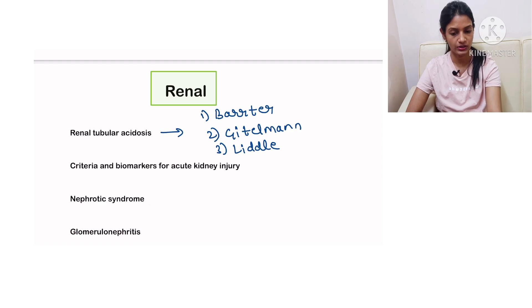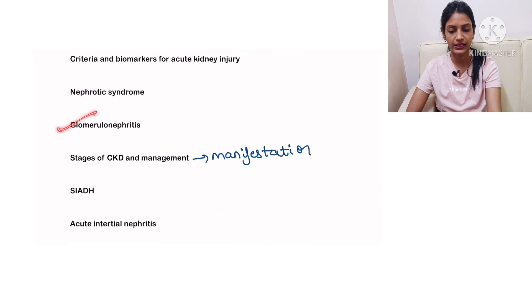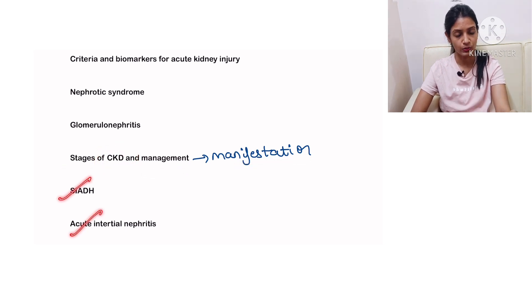In renal they can ask you about renal tubular acidosis, Barter, Gitelman, Liddle, then criteria and biomarkers of acute kidney injury, nephrotic syndrome, glomerulonephritis, stages of CKD and management and the manifestations of CKD, SIADH, acute interstitial nephritis.